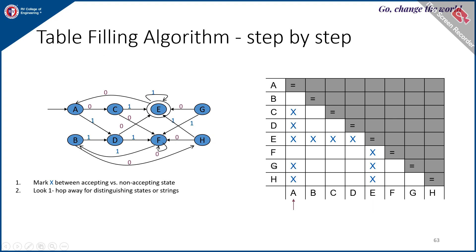Next, with respect to A and H on input alphabet 0 and 1: A on 0 goes to C, H on 0 goes to F — both non-final, so leave that. A on 1 goes to D, H on 1 goes to E. This means A rejects string '1' whereas H accepts it, so they cannot be equivalent — put a cross for A and H. Now check pair A and G: A on 0 goes to a non-final state, G on 0 goes to a final state — not equivalent, so put a cross.